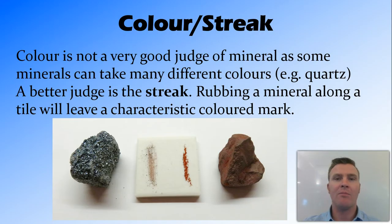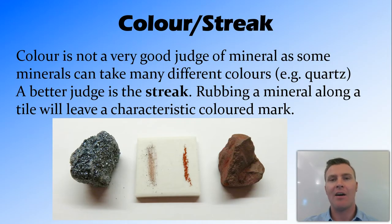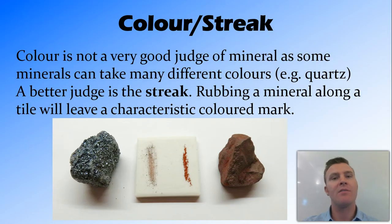The streak can be found by grinding the rock or mineral up into very fine granules. The way we do this as a test is we rub the mineral along a white tile and it will leave a characteristic coloured mark. This coloured mark may be different to the natural appearance of the mineral in its solid form.